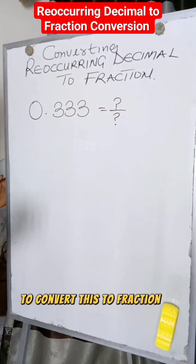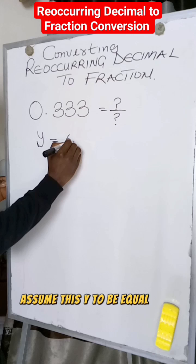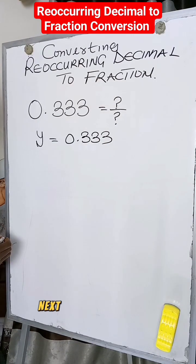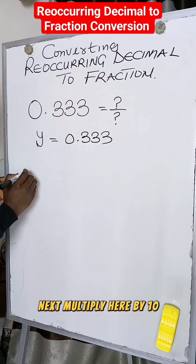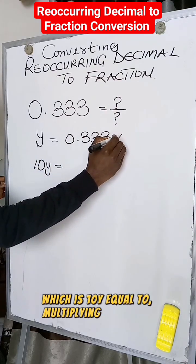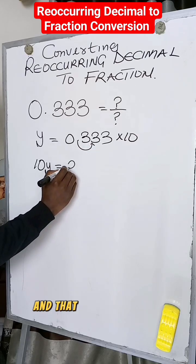To convert this to a fraction, do this: assume this y to be equal to 0.333. Next, multiply here by 10, which is 10y equal to 3.333. Multiplying here by 10 will move this decimal fraction to this point.